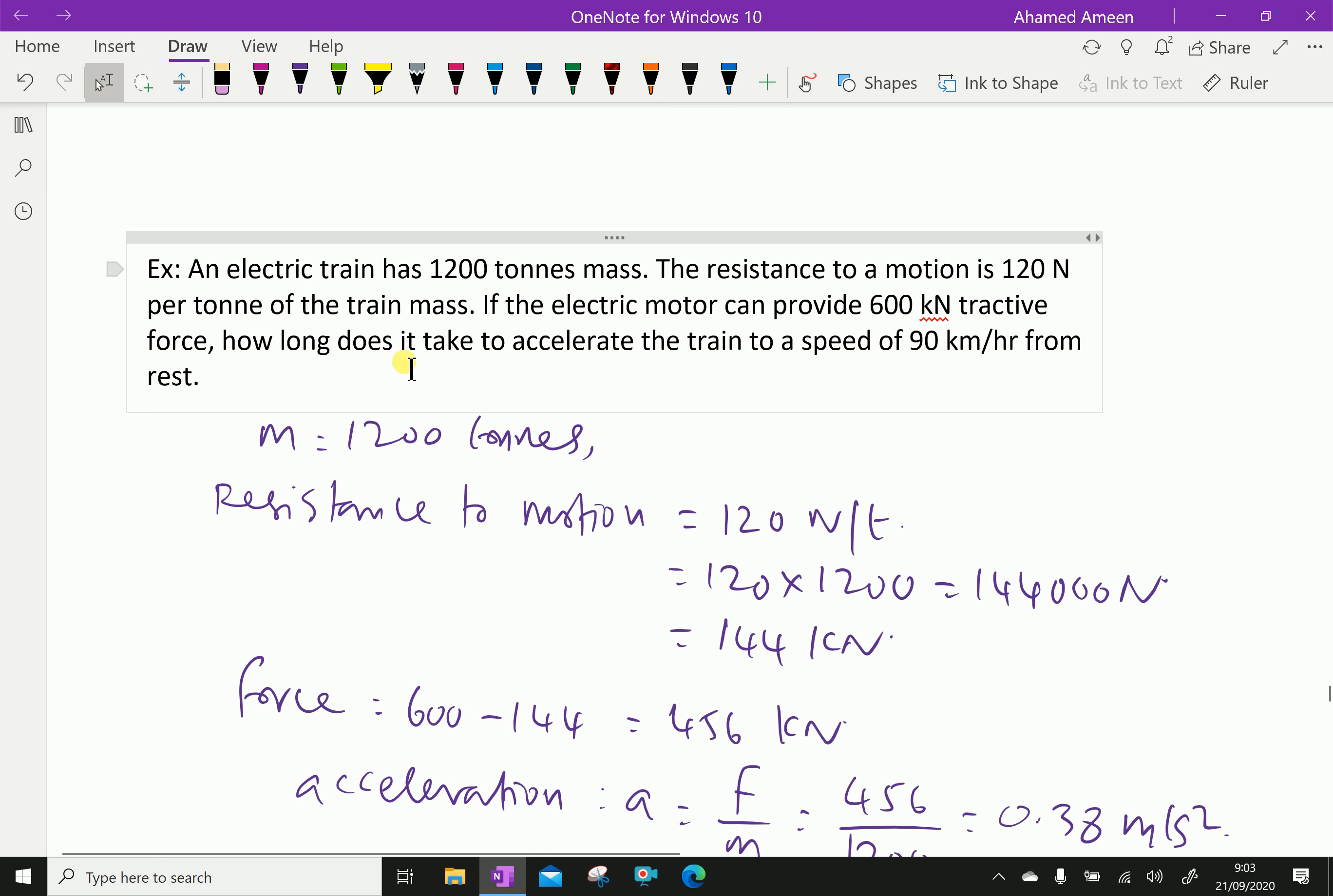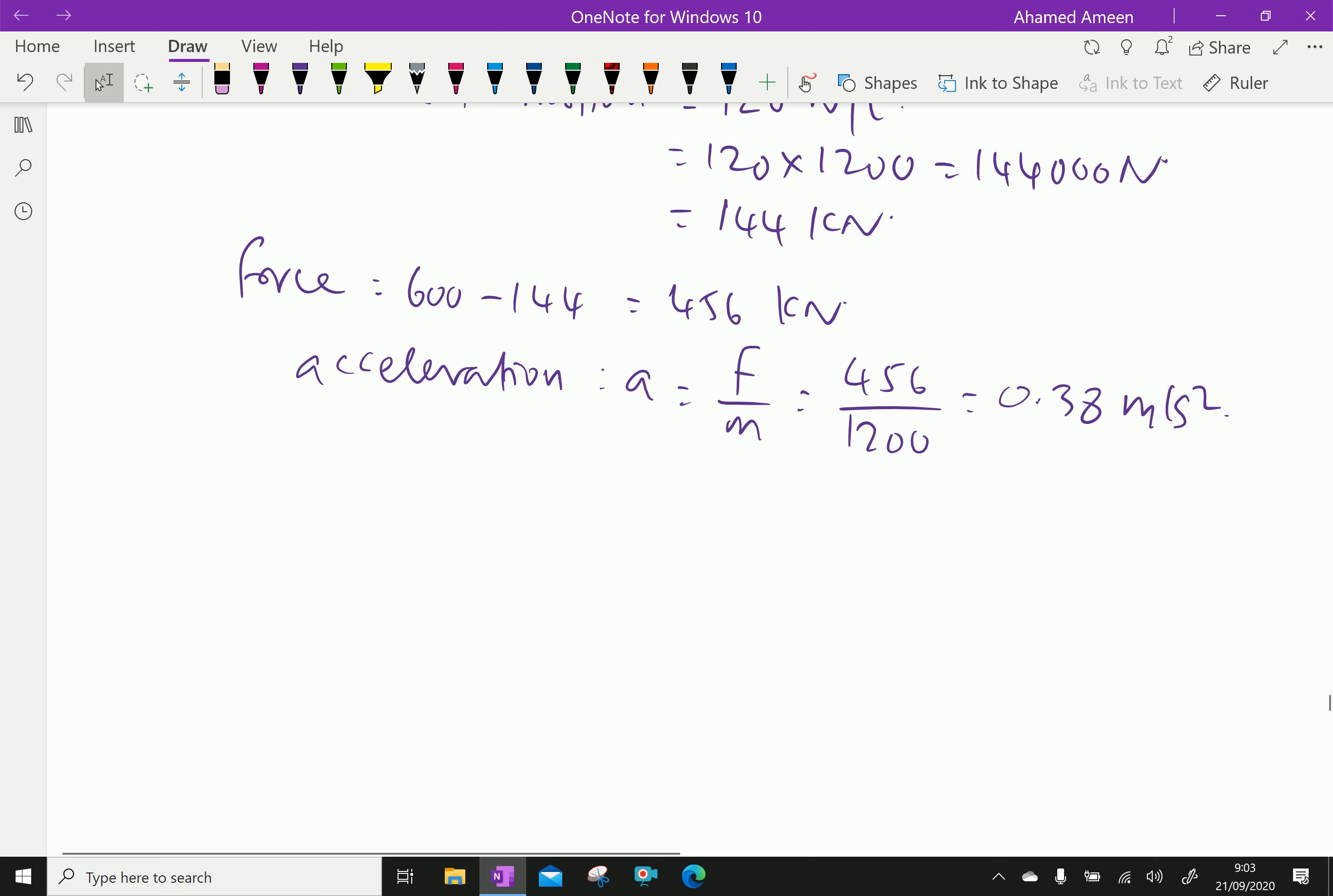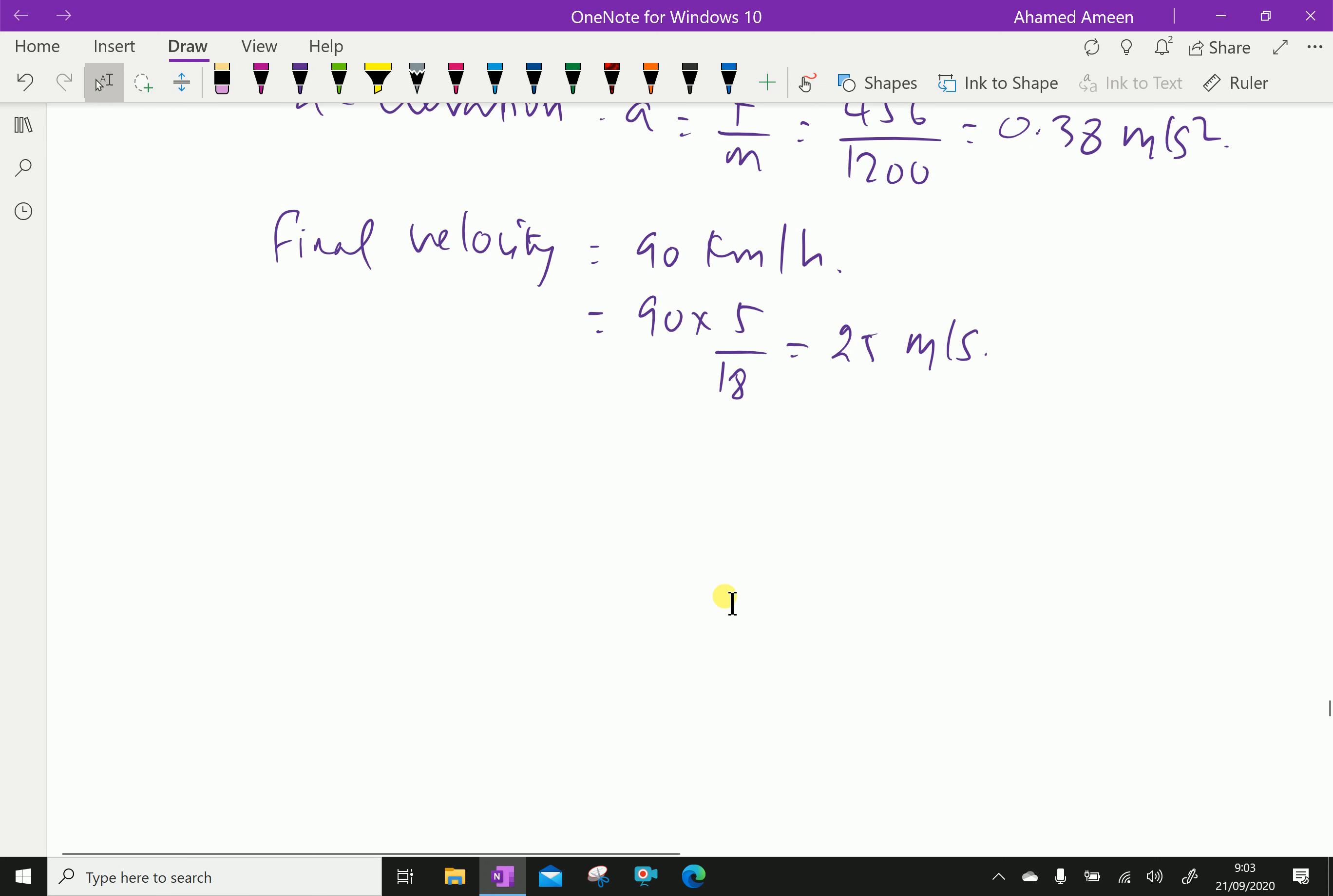Train speed is 90 kilometer per hour from rest. Final velocity equals 90 times 5 over 18 equals 25 meter per second, converting kilometer per hour to meter per second.